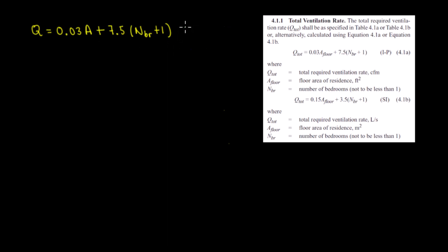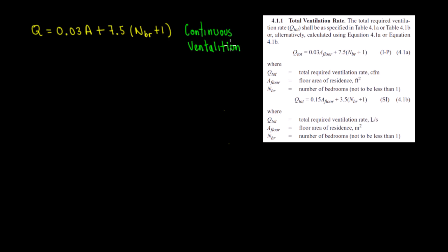This is continuous ventilation. Remember that — because even I didn't understand this very well at first, whether it was continuous or intermittent. This formula works for continuous ventilation. For intermittent, it's going to be different.